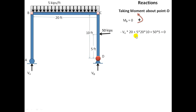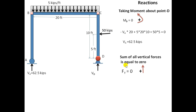Summing these three moments — due to reaction VA, due to UDL, and due to the concentrated load — equal to zero, we get VA equal to 62.5 kN. For VD, taking the sum of all vertical forces equal to zero, with upward positive and downward negative: 62.5 acting upward minus 5 into 20 acting downward gives VD equal to 37.5 kN.